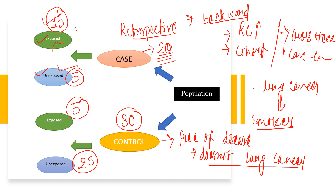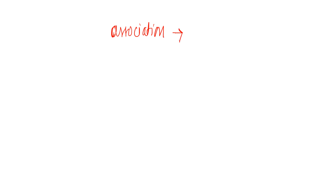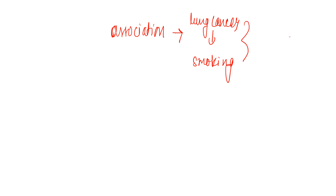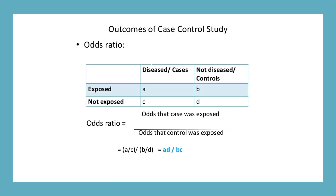This categorization is necessary to find the association between lung cancer and smoking. In a case-control study, we look for the association between the disease and the exposure. The association between lung cancer and smoking can be determined by calculating the odds ratio. If we calculate the odds ratio, we can find the association between lung cancer and smoking.